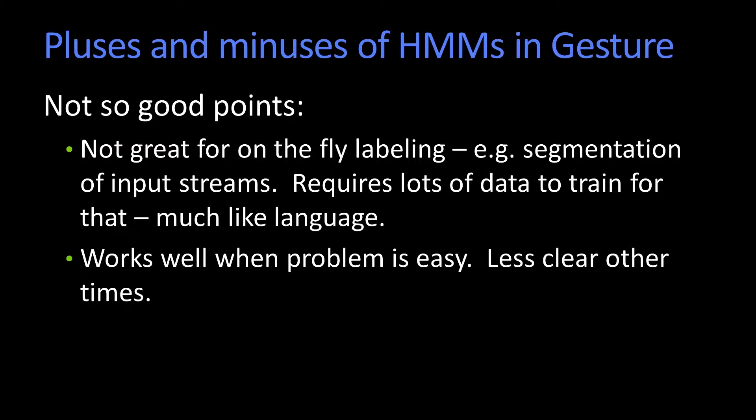They're not as good for segmentation labeling as some newer methods. I mentioned conditional random fields earlier. If you actually have something where your training data has particular underlying states and you know what those states are — so it's not even really a hidden Markov model, it is a Markov model, but your training data has known underlying states — and you're seeing an observation and you want that state sequence for segmentation, there are now better methods.